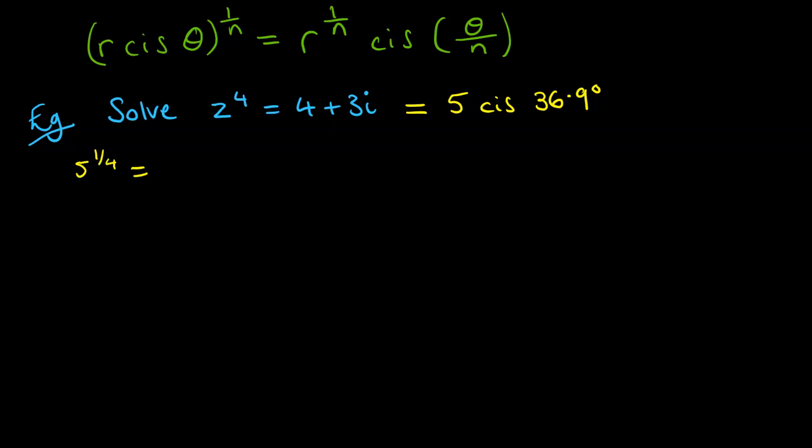So we do our modulus to the power of a quarter, which comes out to 1.495, and 36.9 divided by 4 comes to 9.2°. So z will be equal to 1.495 cis 9.2°. But this is actually only one solution. And we know that if we're doing something to the power of 4, we should get 4 solutions out of that. So we need to think now, how do we come up with the other 4? So I'm going to call this z1. This is just our first solution.